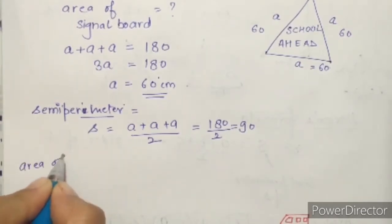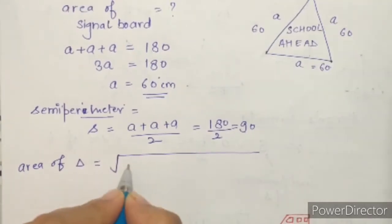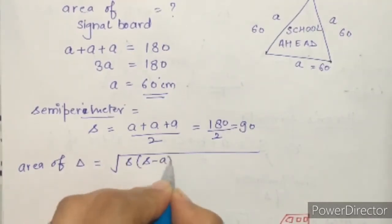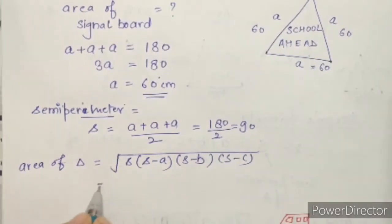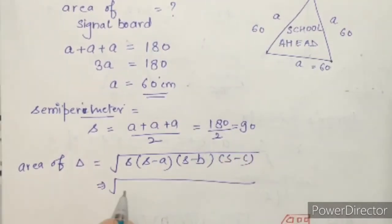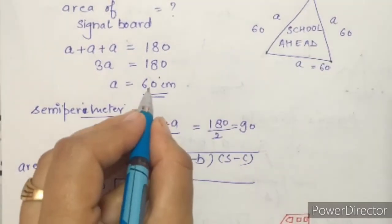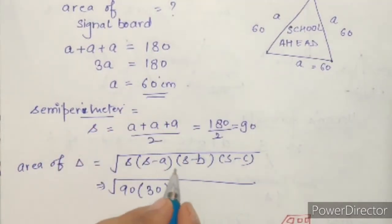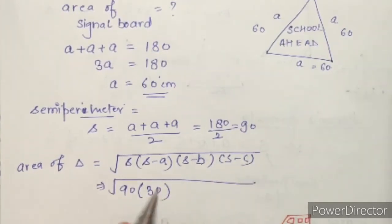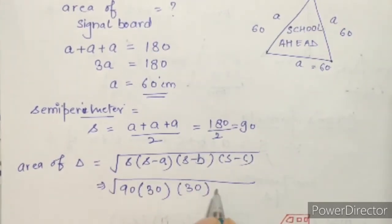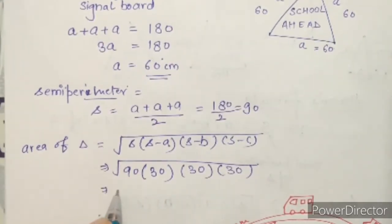Now we apply the area formula. Area = √(s × (s−a) × (s−b) × (s−c)). Our s is 90. So: 90 − 60 = 30, and since all sides are equal, s−a = s−b = s−c = 30. All three values are 30.